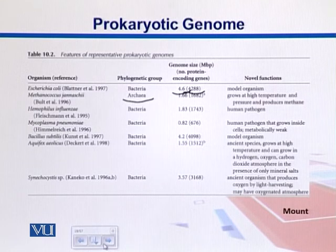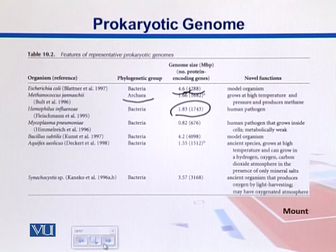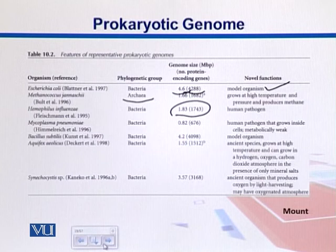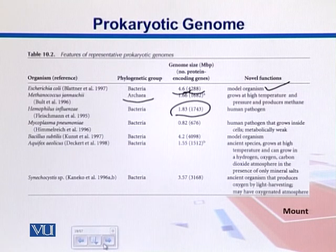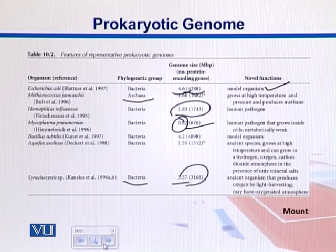Methanococcus is 1.66 MB and has 1,682 genes — it grows at high temperatures and produces methane, which could potentially be useful for natural gas. Haemophilus influenzae is 1.83 MB with 1,743 genes and is a human pathogen. Mycoplasma pneumoniae is a pathogen at 0.82 MB with 676 genes. Finally, Synechocystis is a bacterium at 3.57 MB with 3,168 genes.